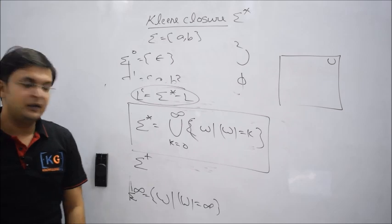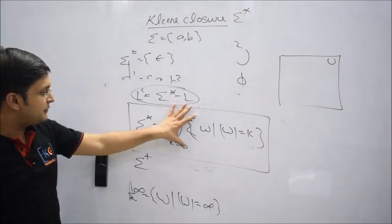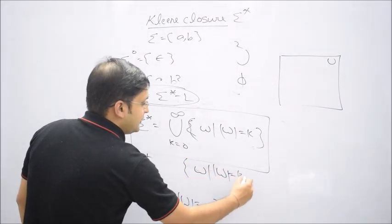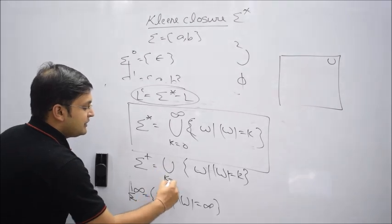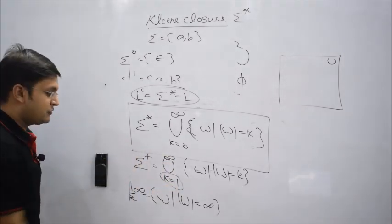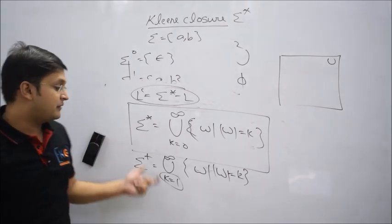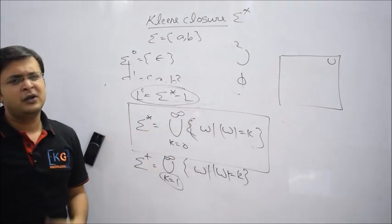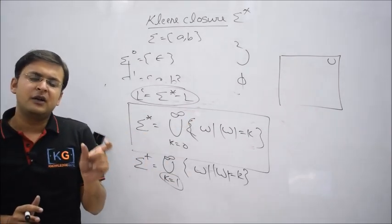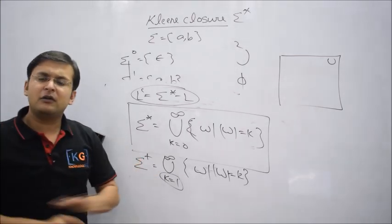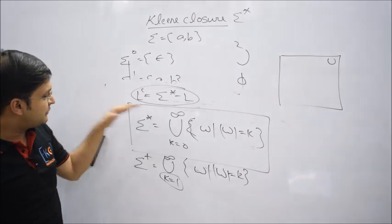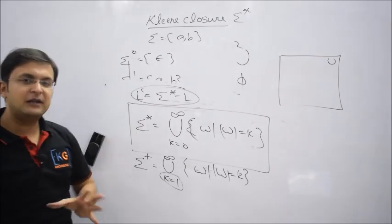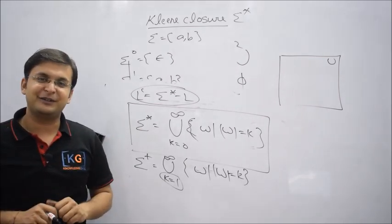Sometimes you encounter sigma plus, or positive closure. The definition is approximately the same as sigma star, with just one change: instead of starting from length 0, we start from length 1. So sigma plus says we must have strings of at least length 1 up to infinity — it does not include the null string. To summarize: sigma positive closure contains all strings from length 1 to infinity, and sigma Kleene closure contains all strings from length 0 to infinity.